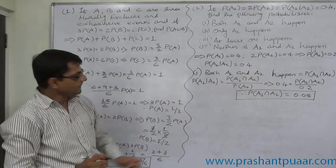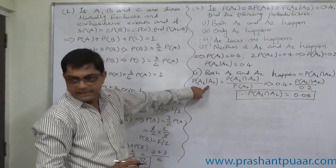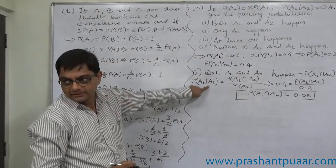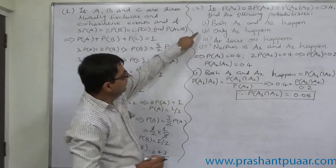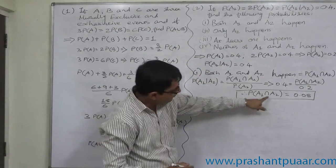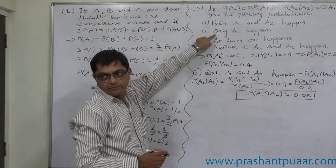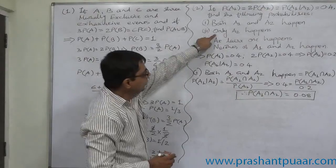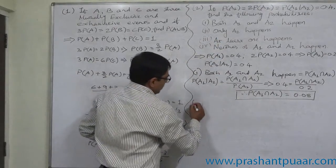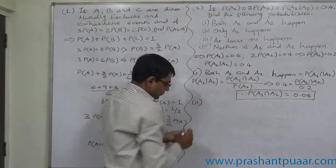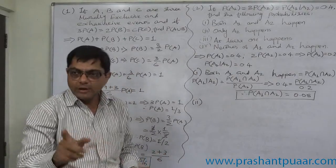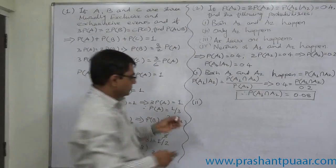We have to use these as the path. If you have the answer of intersection, then only you can calculate the second case: only A2 happens. Only A2 happens. What do you mean by only A2? That means A2 happens but A1 does not happen.